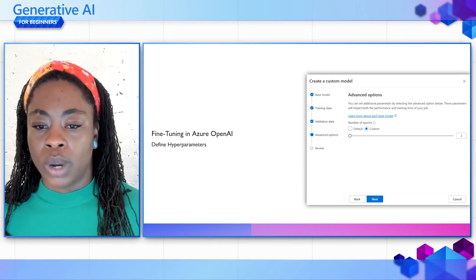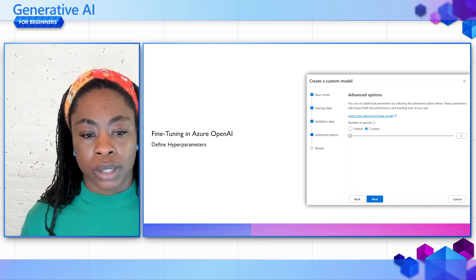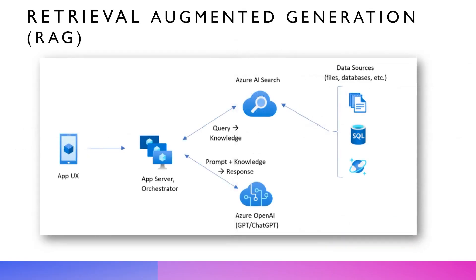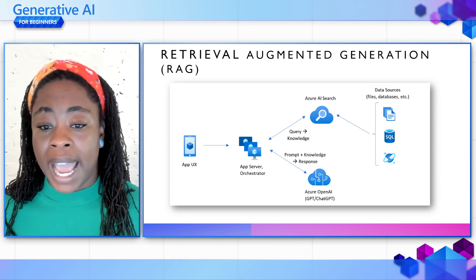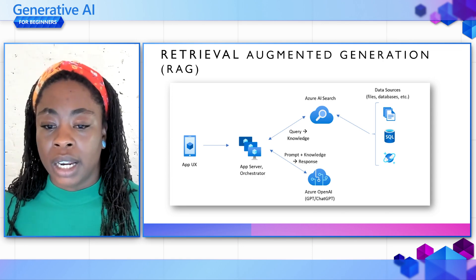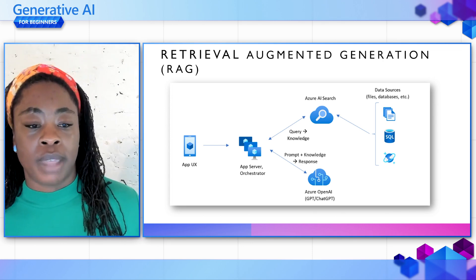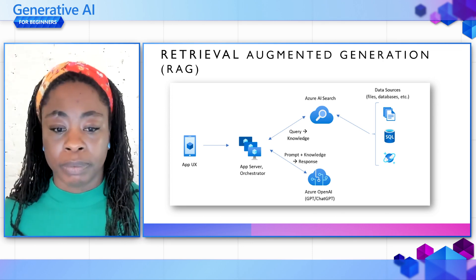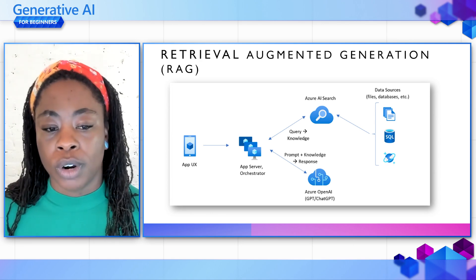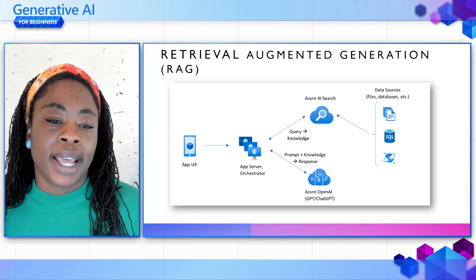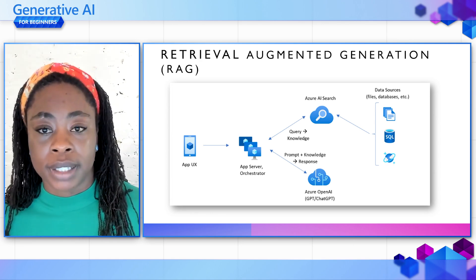Another option is Retrieval Augmented Generation, or RAG. It's an architecture pattern that augments the capabilities of an LLM — like ChatGPT — by adding an informational retrieval system that provides grounding data. Adding this system gives you control over the grounding data used by an LLM when it forms a response.